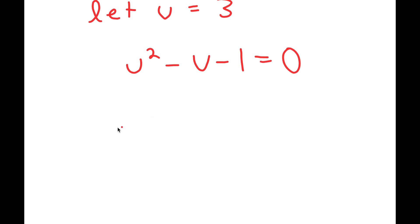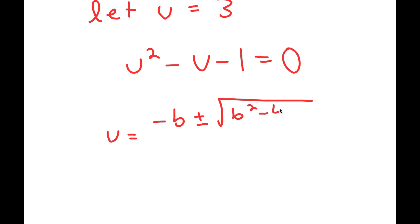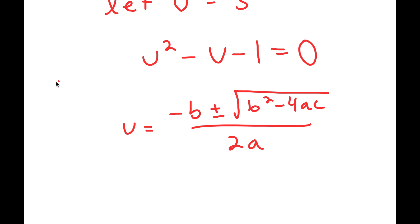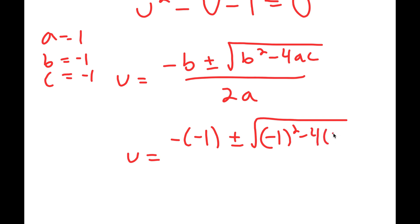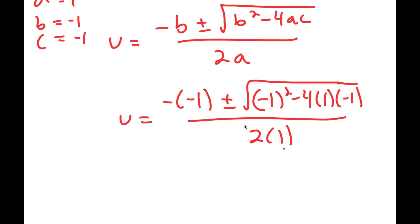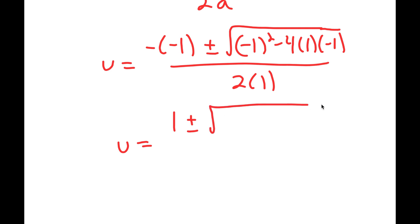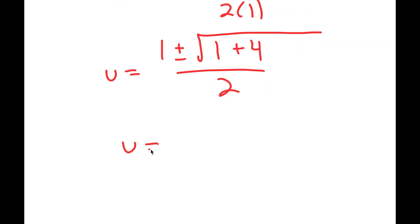To solve this I can use the quadratic formula, which is negative b plus or minus the square root of b squared minus 4ac, all over 2a. In this case a is 1, b is negative 1, and c is negative 1. So I get u equals negative of negative 1 plus or minus the square root of negative 1 squared minus 4 times 1 times negative 1, all over 2 times 1. This equals 1 plus or minus the square root of 1 plus 4 over 2, which is equal to 1 plus or minus the square root of 5 over 2.